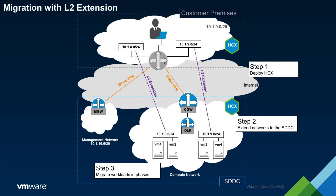This next phase is very similar to the site cutover model discussed previously. Here, we are essentially making the SDDC the active environment for the migrated networks. The first step is to disconnect the L2 extension and make the logical networks routable within the SDDC.